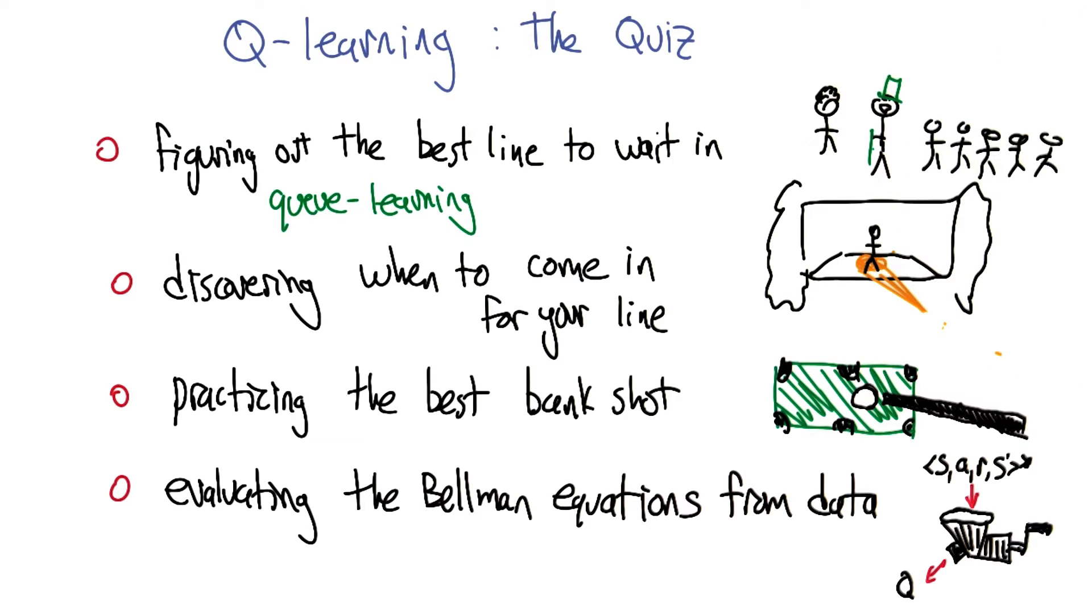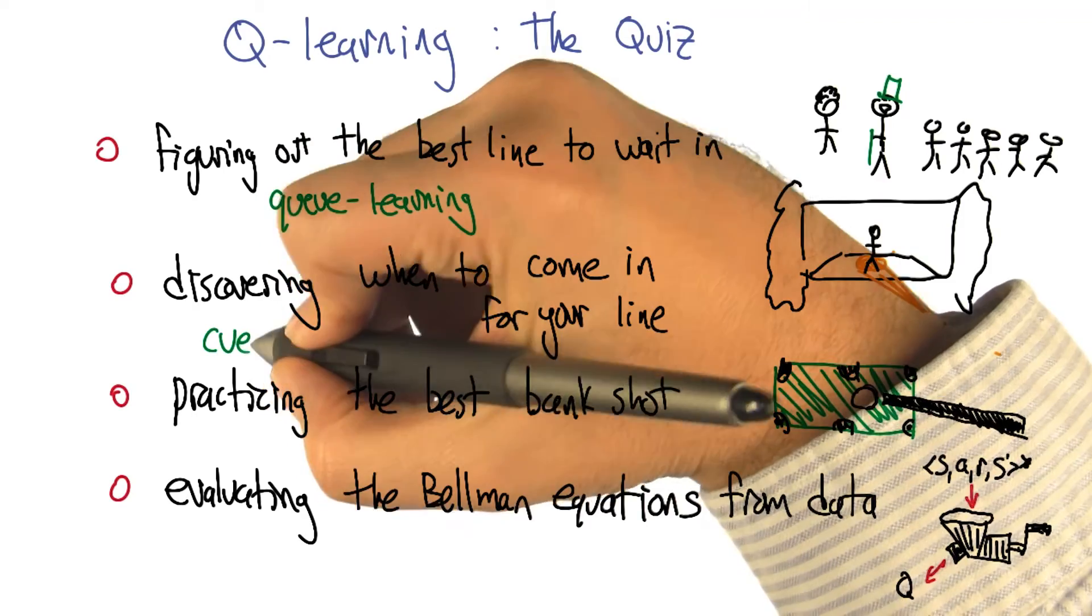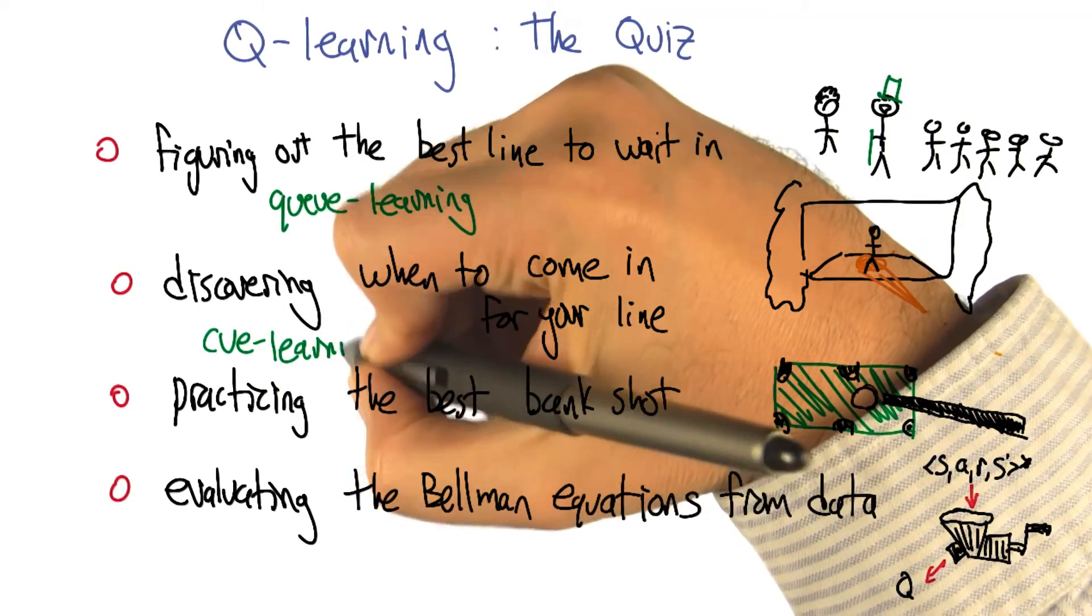Okay. Yeah, and a cane, too. Yeah, I like it. And a cane, yes, well, that is typically what I do whenever I go to London. Discovering when to come in for your line, that is also Q learning, though a different kind of Q. Q-U-E learning.